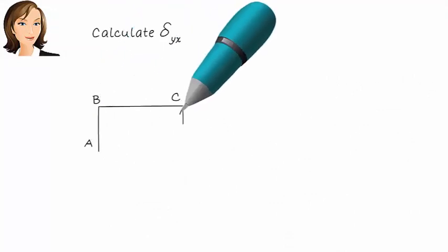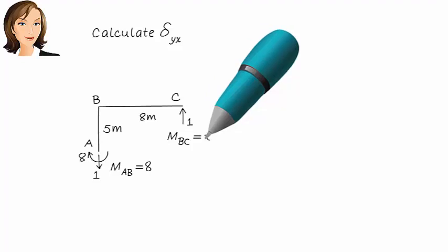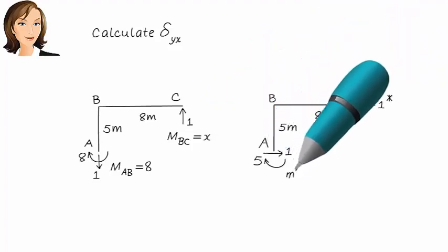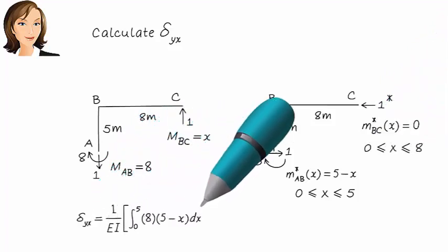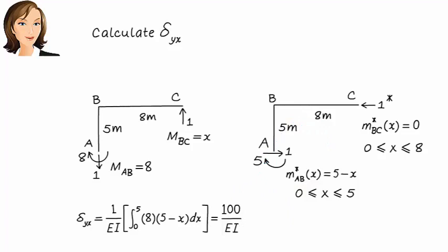Finally, we calculate delta yx. Here, we want to determine vertical displacement at C due to a horizontal unit load at C. So what we refer to as M when calculating delta xy becomes M star here, and the M star we used for delta xy becomes M here. Not surprisingly, delta yx equals delta xy.